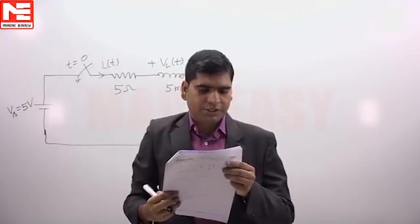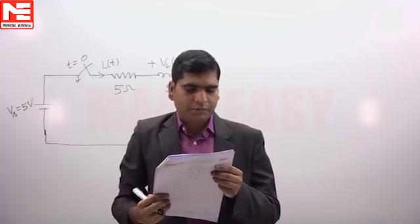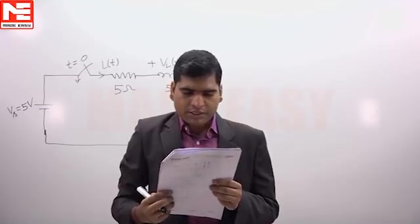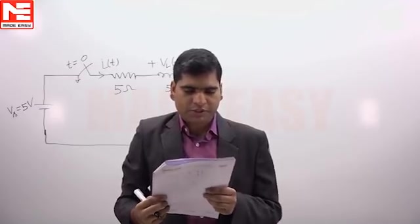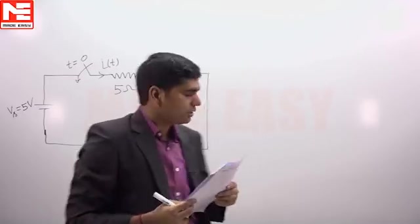In this question we have been given i(t) that is A into something and VL(t). Now it is said that the value of expression AB upon C we have to calculate.